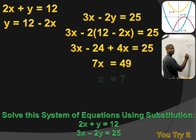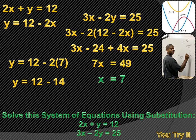Dividing both sides by 7, I get X equals 7. Now I need to find Y, so I substitute X equals 7 into one of the equations. I'll pick the easier one — Y equals 12 minus 2X. I replace X with 7, so it reads Y equals 12 minus 2 times 7, and I come up with Y equals minus 2. The solution to this system of equations is X equals 7, Y equals minus 2.